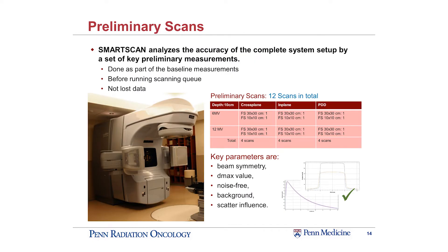One of my favorite things about the SmartScan software is the incorporation of preliminary scans. This is something I've done and taught my residents to do — before you think your setup is right and you're ready to start scanning, just do a couple of preliminary scans before you launch your scanning queue. SmartScan takes that and instead of making it good practice, it makes it standard practice. It's done as part of the baseline measurements, and it tells you what parameters from the LINAC it requires. Once you beam on, it detects the beam and starts running these preliminary scans. For 6X, there are a couple of profiles and PDDs, and it lets you know your setup is good. It's also not lost data — if you confirm these are good scans, it'll remove those respective items from your scanning queue. So there's no lost time.